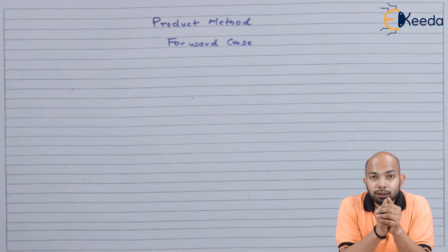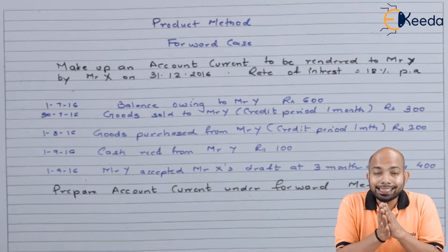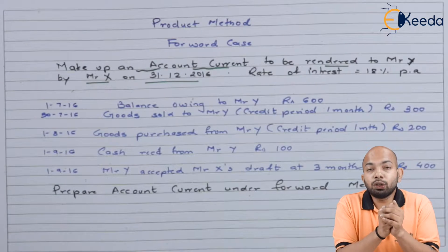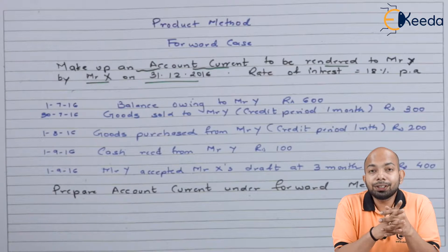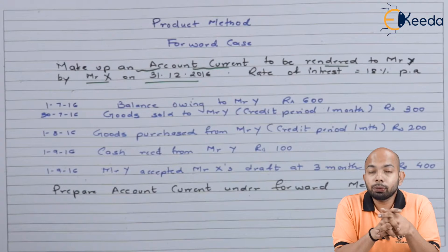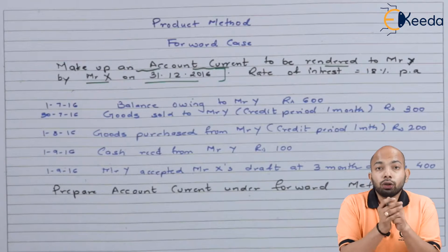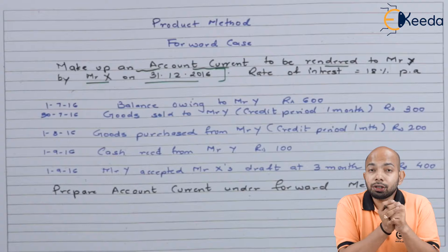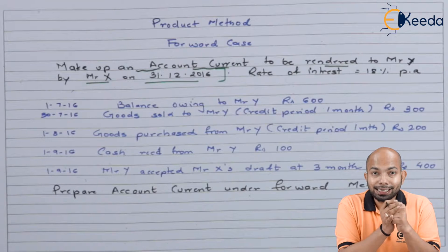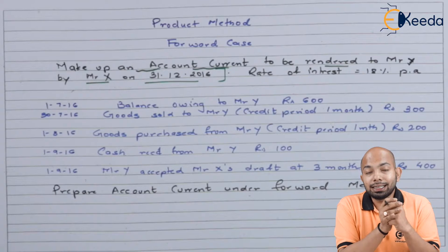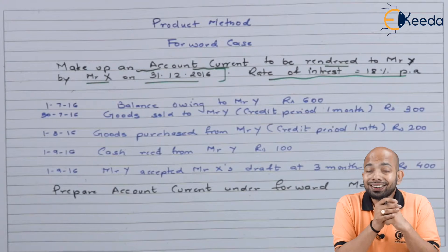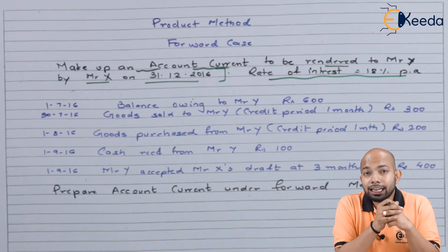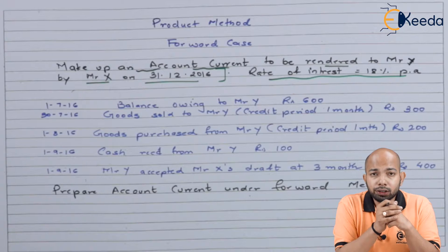Let's start with it. We have to make up an account current which is rendered by Mr. Y to Mr. X on 31st of December 2016. The rate of interest is 18% per annum. The following transactions and dates have been mentioned along with the amount.